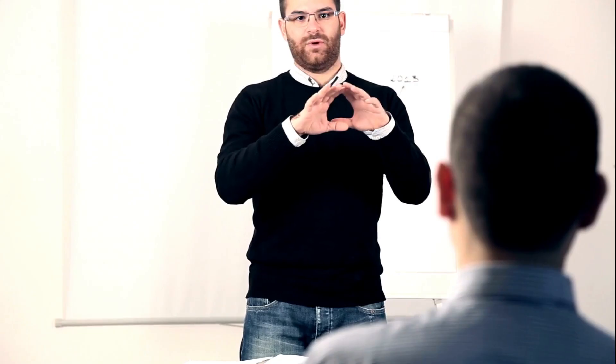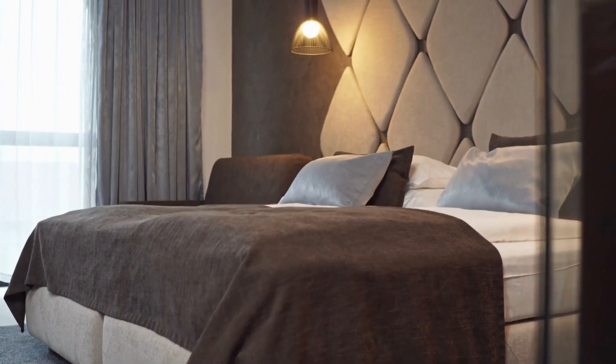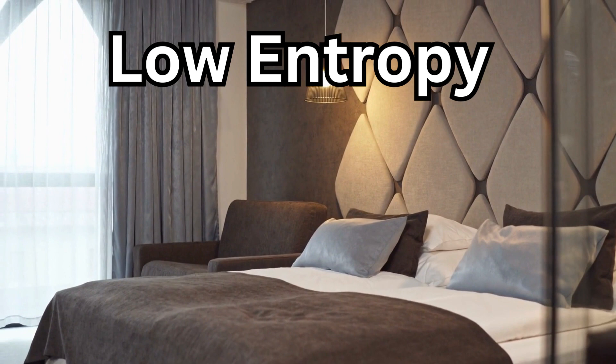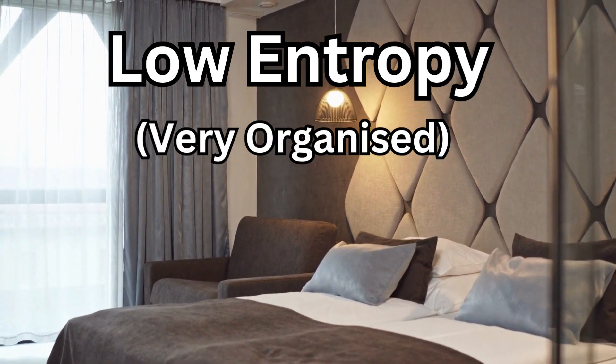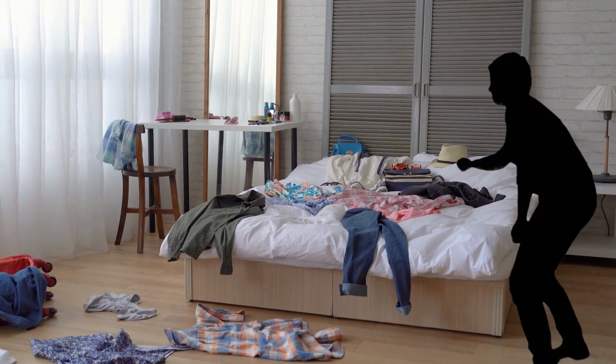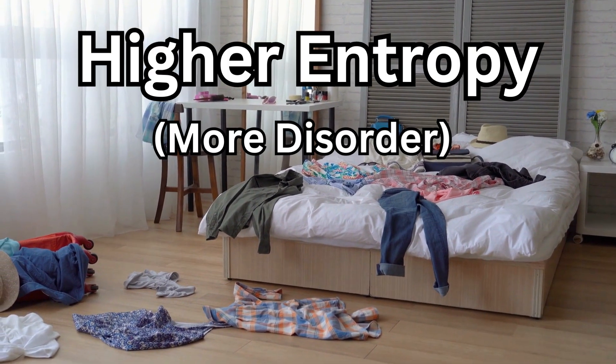To explain entropy, let's think of a neat and tidy room here where everything is in its place. It's like having low entropy, which basically means it's very organized. Now imagine you start tossing things around and making a mess in the room. This leads to higher entropy, which means more disorder or chaos.